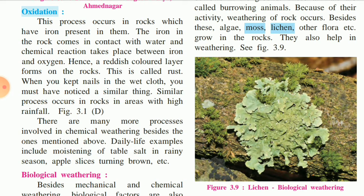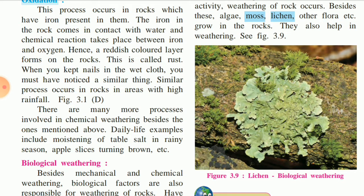A similar process occurs in rocks in areas with high rainfall. Just like in the nail and wet cloth experiment, the same thing happens in rock — the iron present in the rock gets wet and because of that it gets rusty and then it becomes red. In this way rocks rust, and the cloth gets stained similarly.